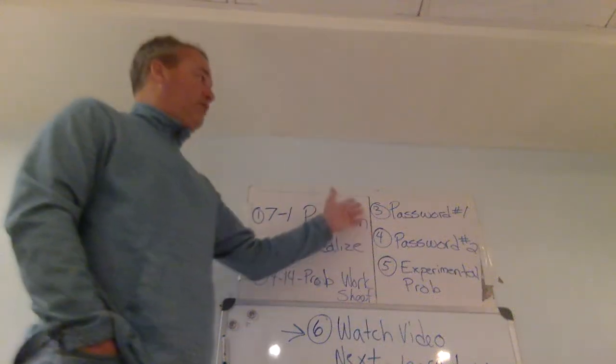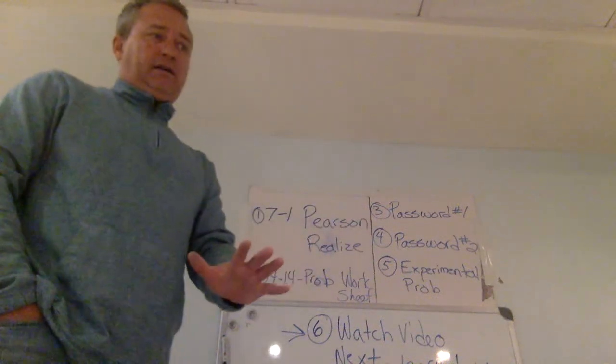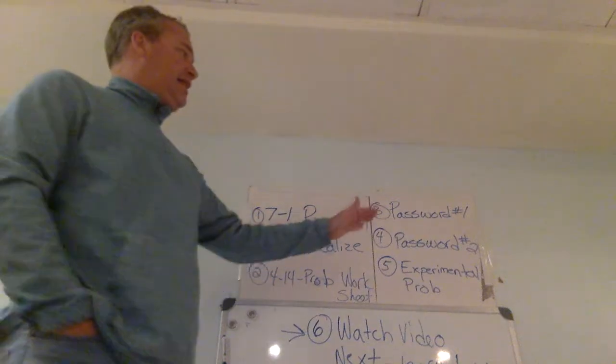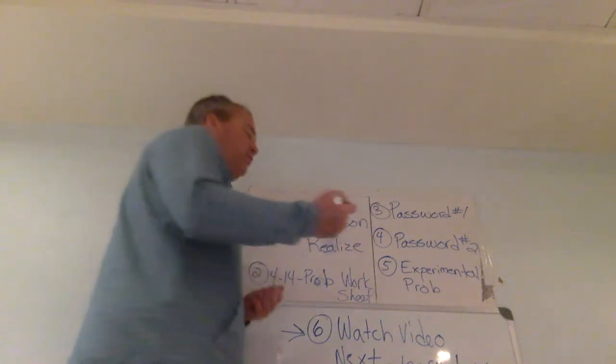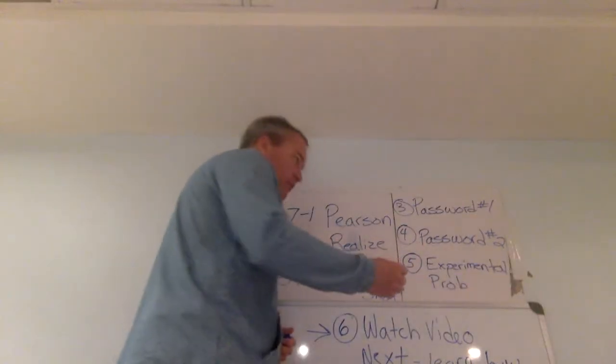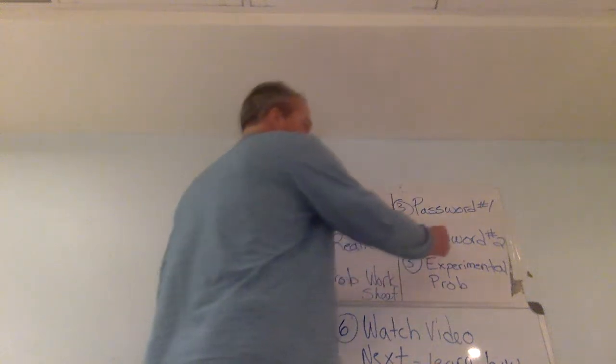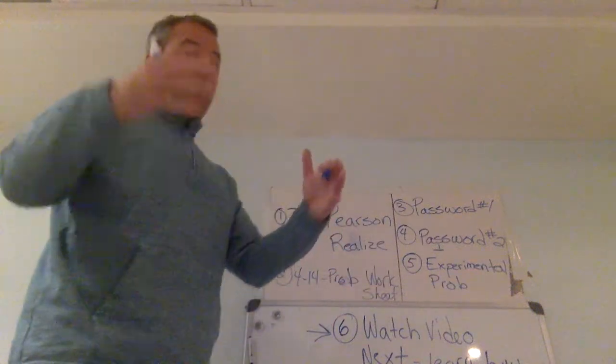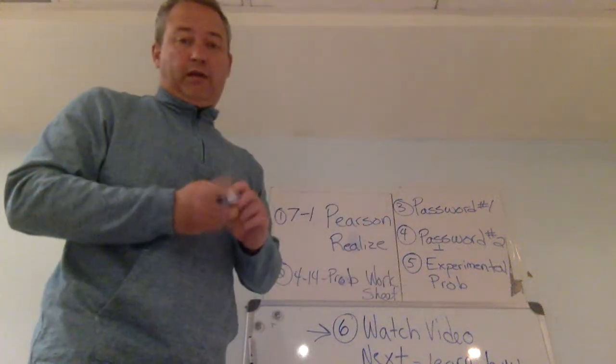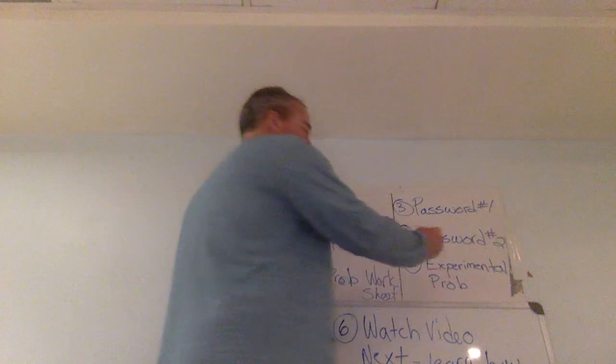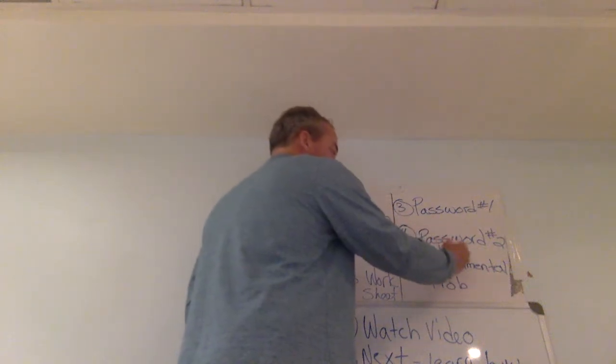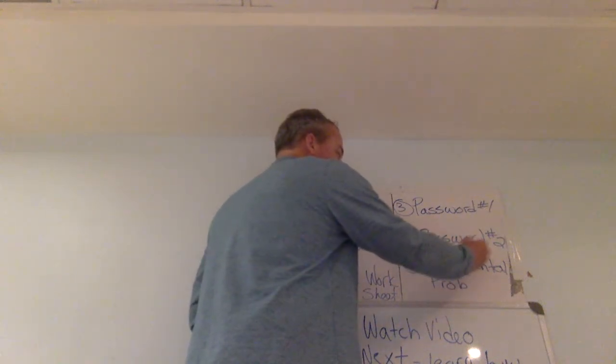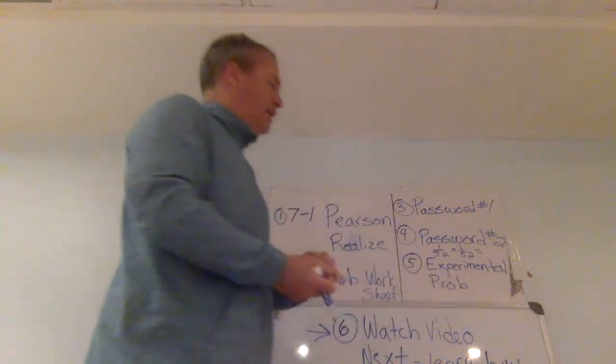Password two, the worksheet, your answer should look like the ones from password one, not exactly, but it should be fractions that multiply together. For example, if it's a two-letter password and case sensitive, that means it could be uppercase or lowercase, so that's 1 over 52 times 1 over 52. Your answer should look like fractions multiplied together for this one.